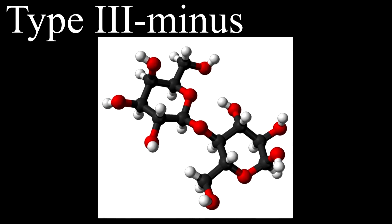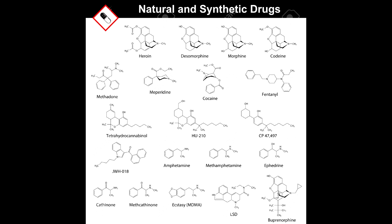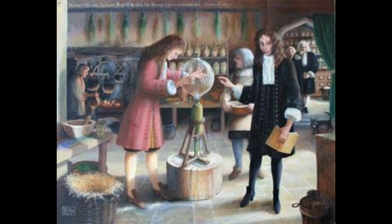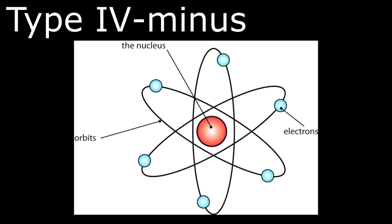A Type 3-minus civilization is capable of manipulating molecules and molecular bonds and creating new materials. This can be in the form of drug design or development of any type of synthetic substances. It's difficult to pinpoint an exact time when humans first surpassed this, but a rough estimate is around the 1600s with the work of famous chemist Robert Boyle. This is where it starts to get really interesting.